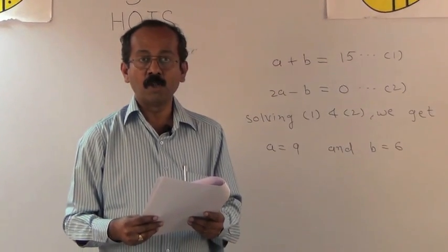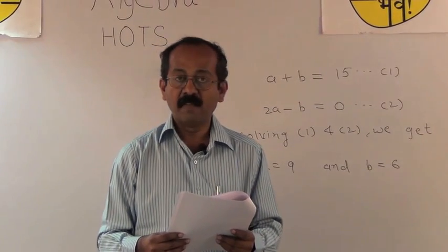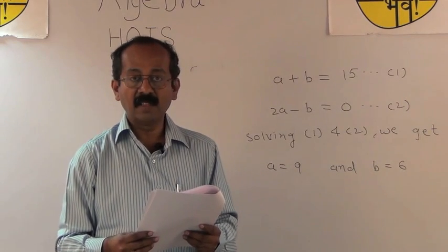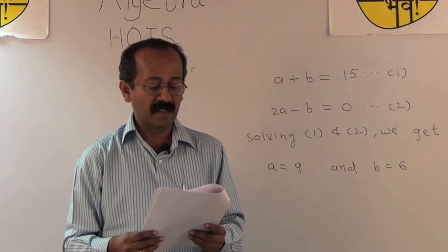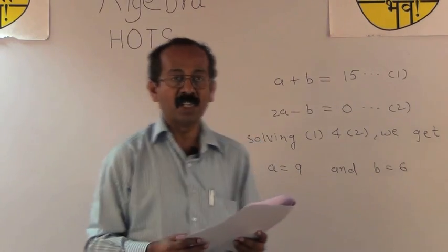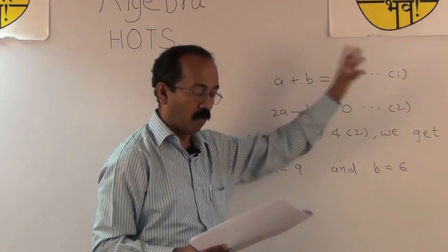Now in the first vessel, the ratio of acid to water is 2 is to 1. Let A liters of liquid be drawn from this vessel. The liquid drawn contains 2A upon 3 liters of acid and A upon 3 liters of water. So from the first condition, we get equation A plus B equals 15, equation number 1.